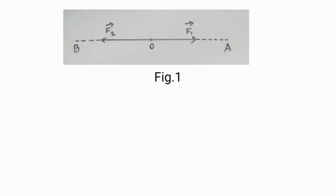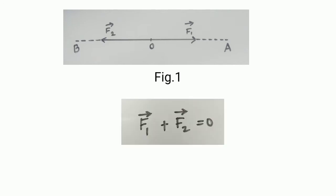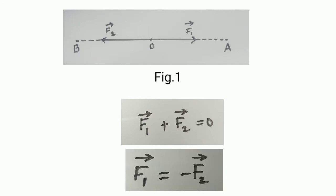For concurrent forces to be in equilibrium, the equilibrium condition must be satisfied. If concurrent forces F1 vector and F2 vector are in equilibrium, then by the equilibrium condition: F1 vector plus F2 vector equals zero. That gives us F1 vector equals minus F2 vector — that is, F1 vector is equal and opposite to F2 vector.